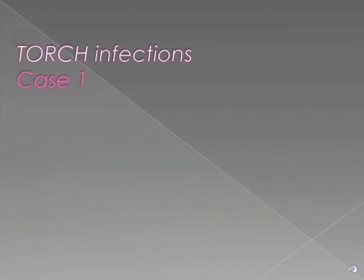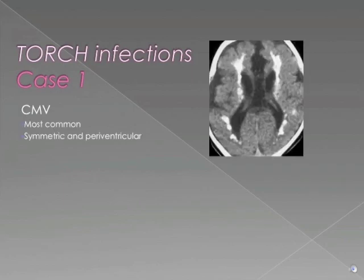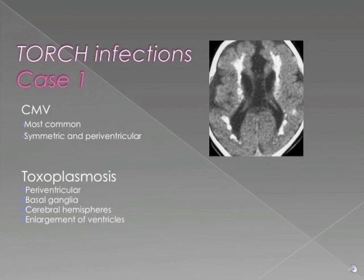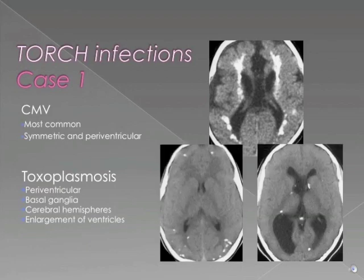Let's review the answers for Case 1. Case 1a was a case of CMV. CMV is the most common of the TORCH infections resulting in symmetric periventricular calcifications. Case 1b was toxoplasmosis. The calcifications in toxoplasmosis are less symmetric than in CMV. They occur in the periventricular regions as well as in the basal ganglia and cerebral hemispheres.